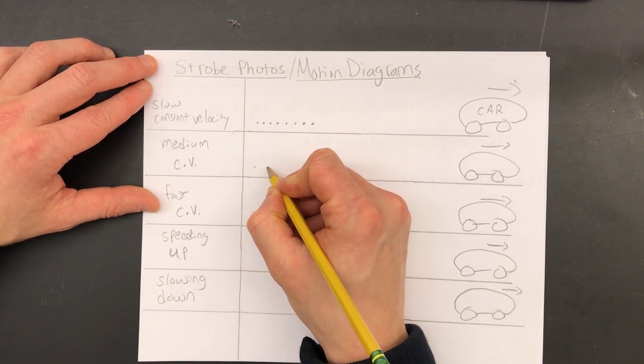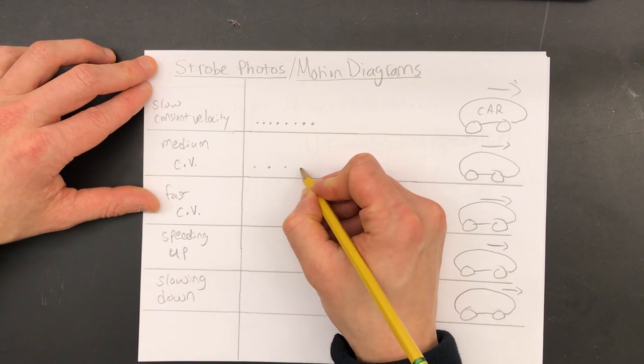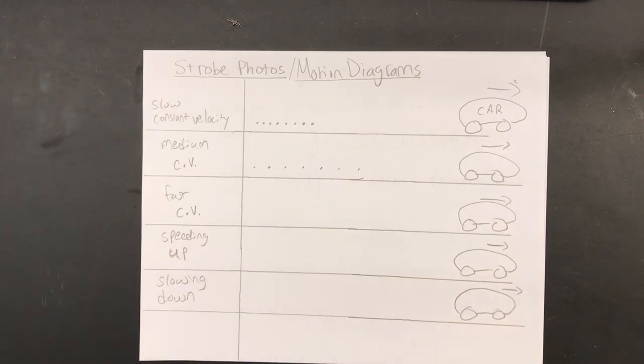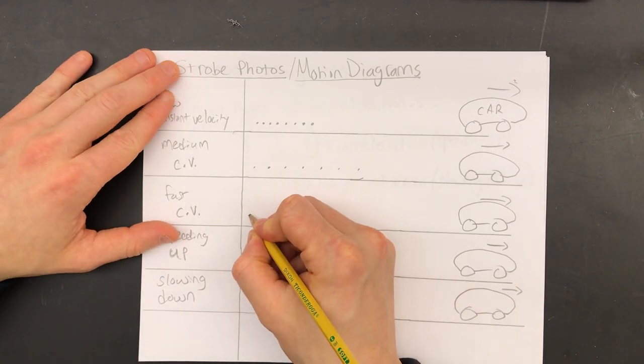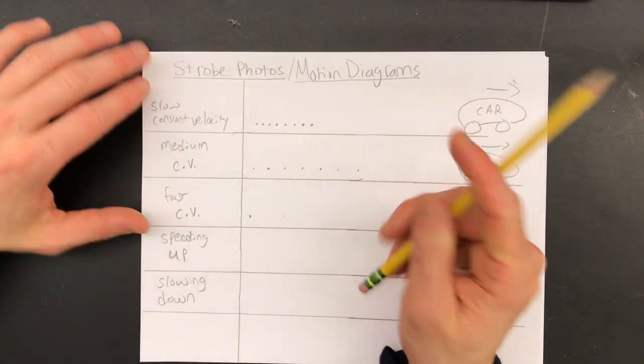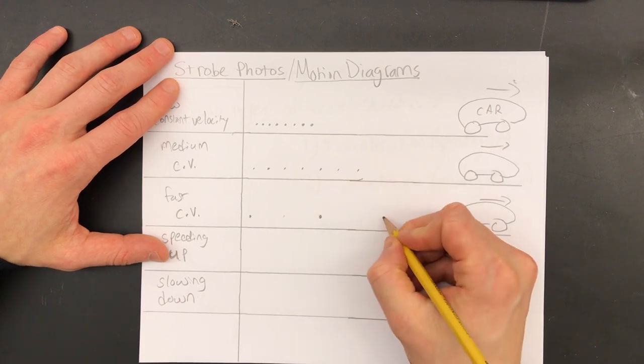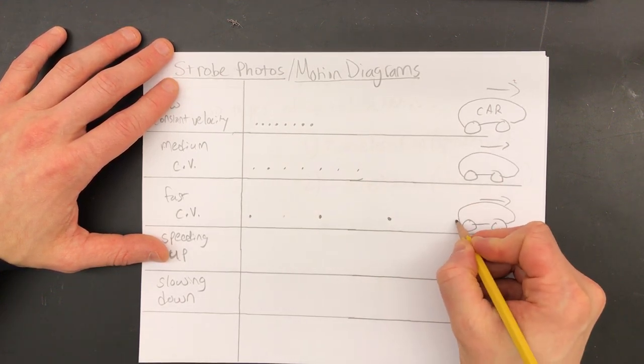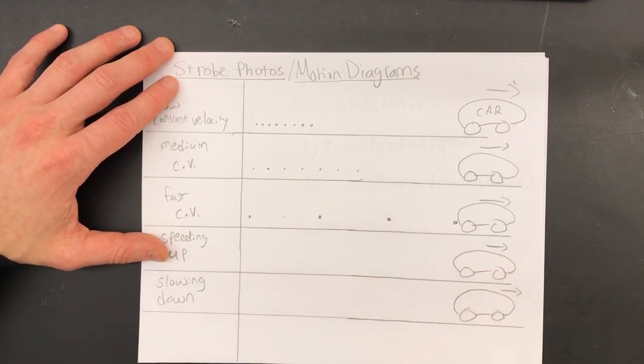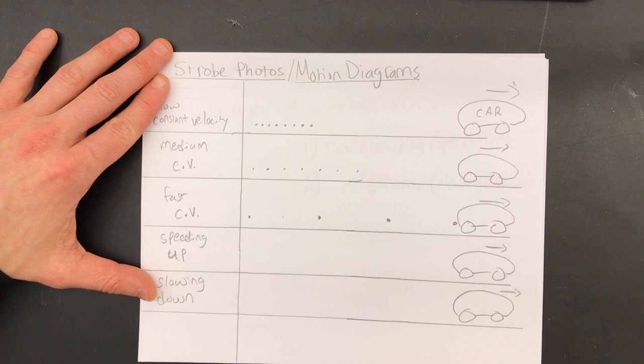A medium constant velocity would have a higher speed. So each dot would get more spacing. But there would still be equal spaces between each dot. Now a fast constant velocity would still have equal spacing between each dot. But the spacing would be larger because the speed is greater and more distance is covered when it goes faster.